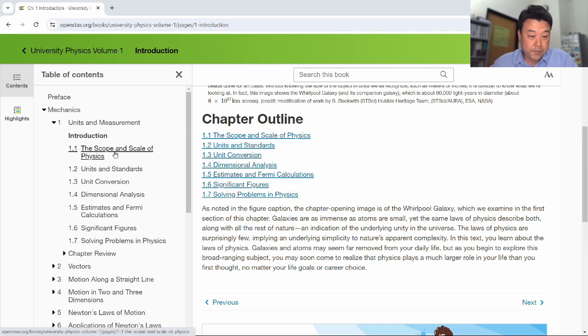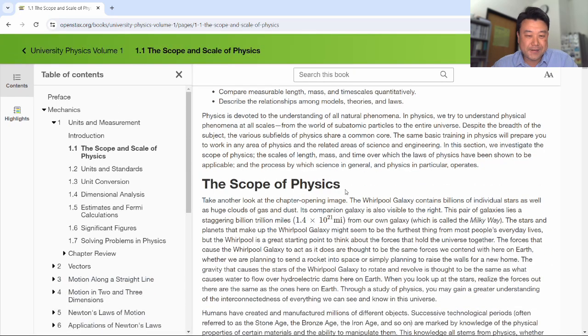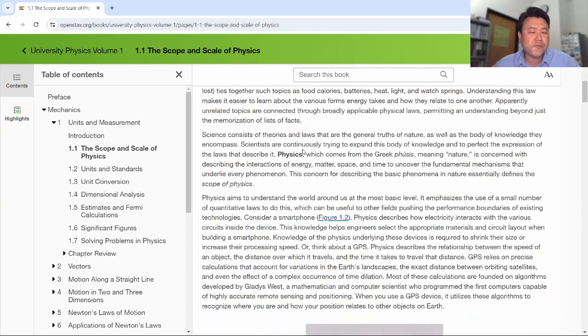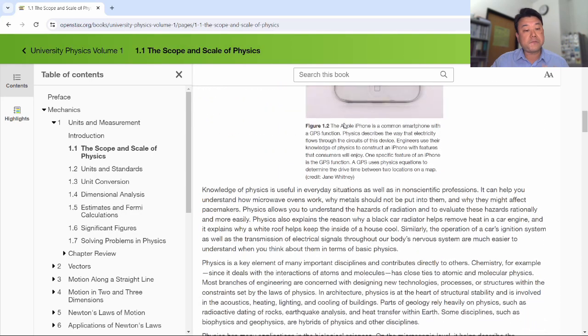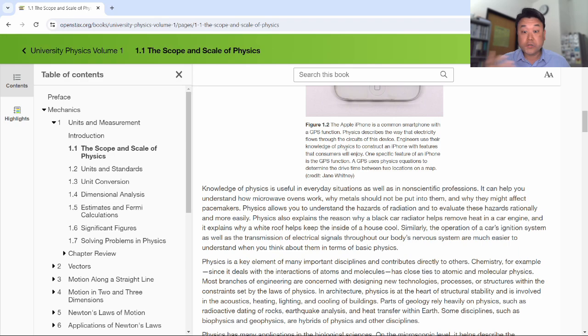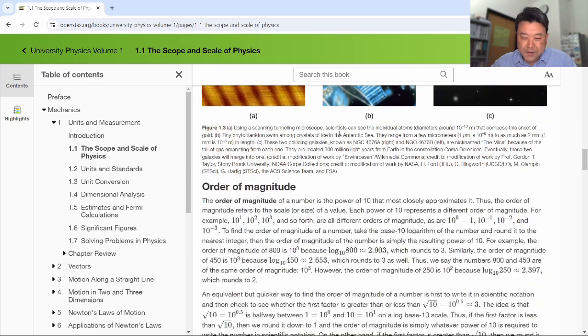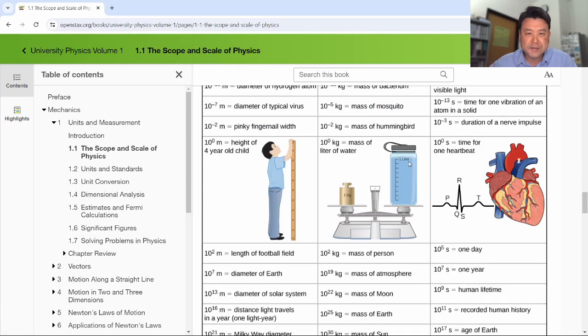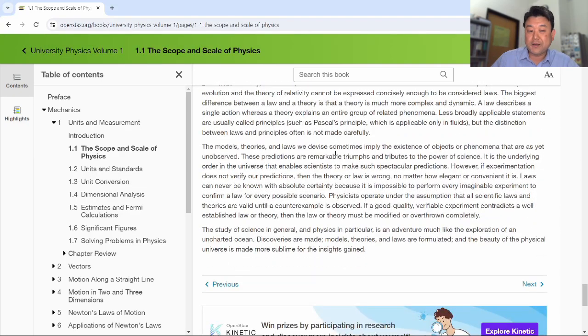So Section 1.1, the scope and scale of physics, is that kind of background material that I was talking about. I don't cover this in the lecture other than to say physics is the fundamental science. And I expect you to have read through this section to kind of get a sense of the topics that are covered under the umbrella of physics and the scale or the orders of magnitude of things covered under the umbrella of physics. I do think there's one homework question that deals with the numbers here about the number of heartbeats in a human lifetime. So Section 1.1, please read through it, especially because I don't really cover it in the lecture.